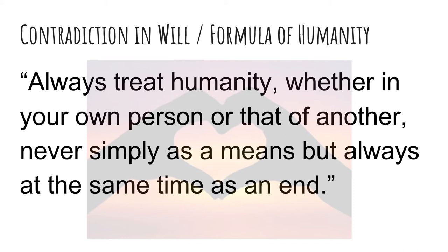The third part is called the contradiction in will test, or the formula of humanity. Kant states: always treat humanity, whether in your own person or that of another, never simply as a means but always at the same time as an end. In other words, to do the right thing I must understand that people are trying to achieve their own ends, and I have to treat them as an end before treating them as a means. I can still use someone as a means, but I must first consider their own ends and ensure they are able to meet them as well as I meet my own.